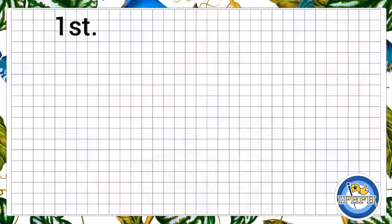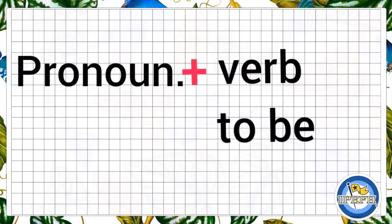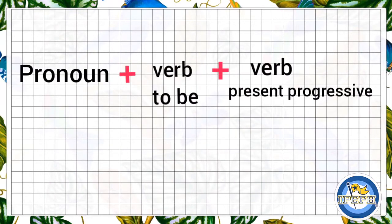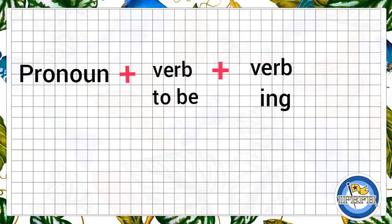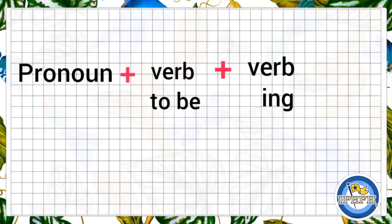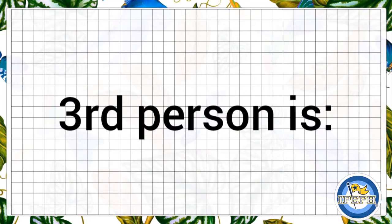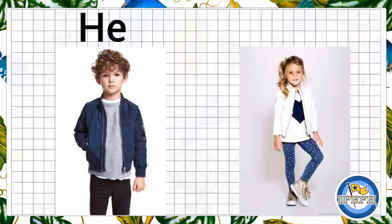Now I'm going to tell you and explain how to talk about and describe in third person. We are going to use first the pronoun and then the verb to be and the verb in present progressive. Remember, the verb in present progressive always finishes with ING. In this case, we are going to learn to describe in third person.